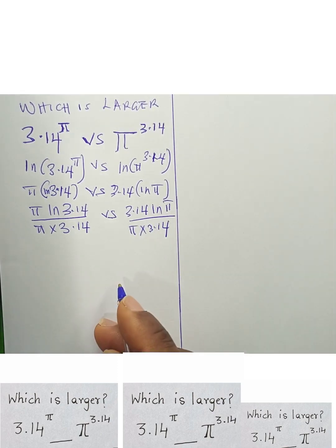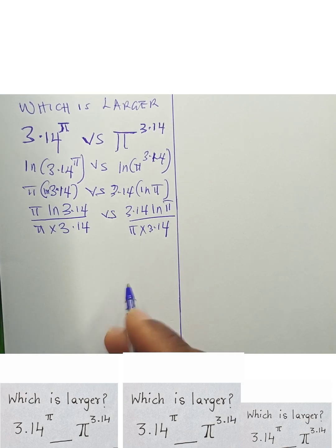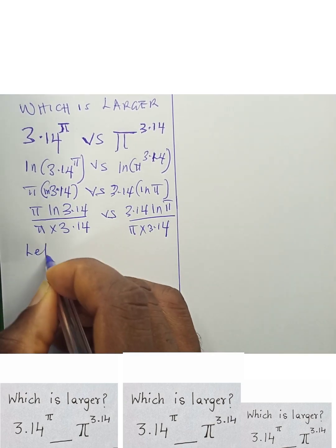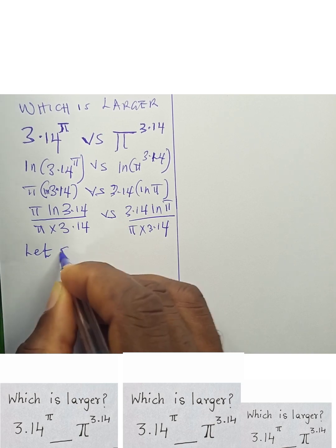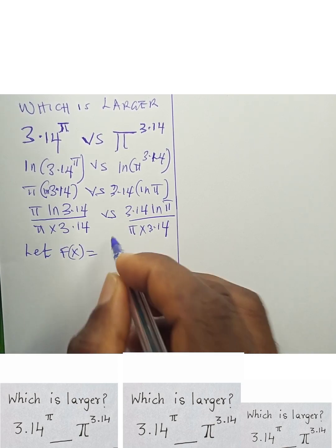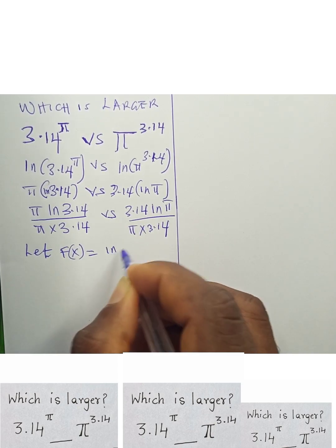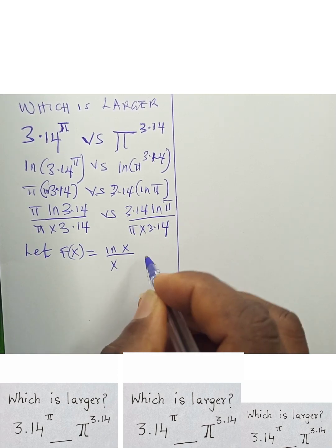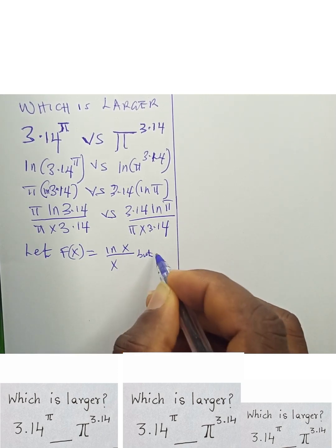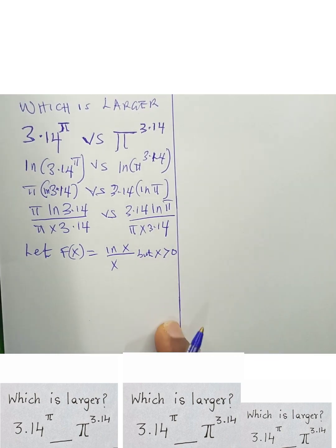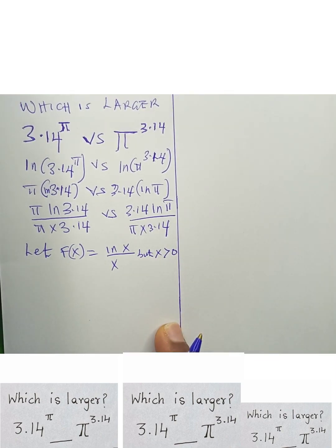So that is what we have. This now looks like a function — let's say a function f(x) = ln(x) / x, where x must be greater than zero.